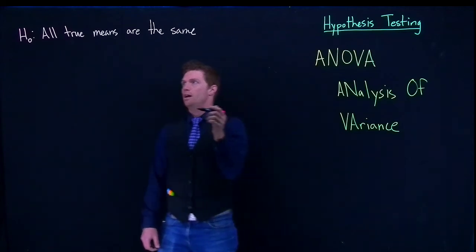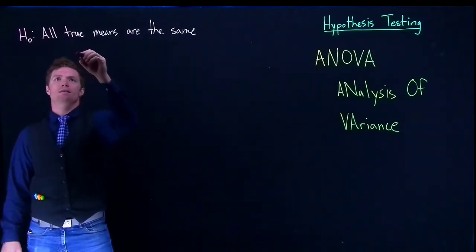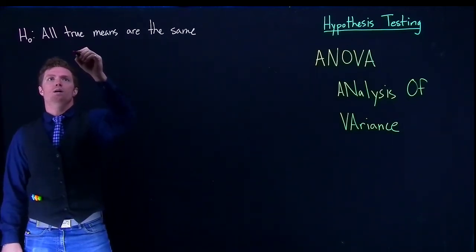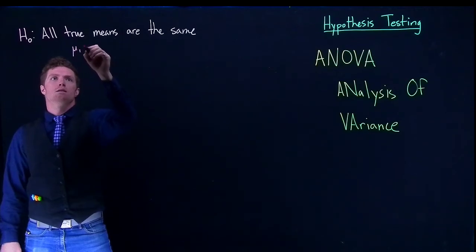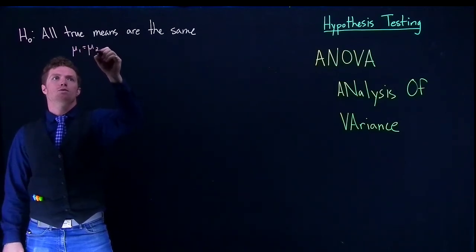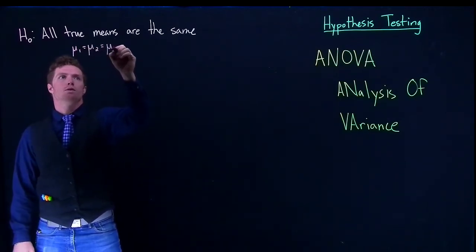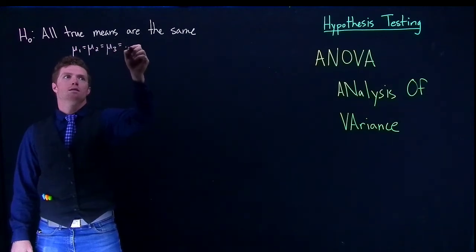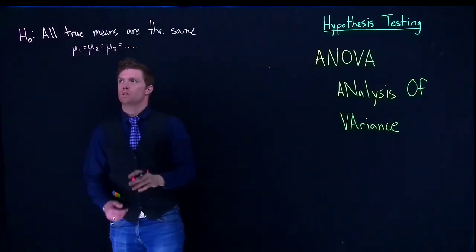Which is saying that all groups have the same mean, and that's our baseline assumption. Mathematically, we can write this out as mu1 equals mu2 equals mu3 for however many groups we actually have.